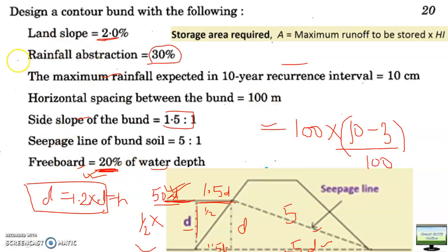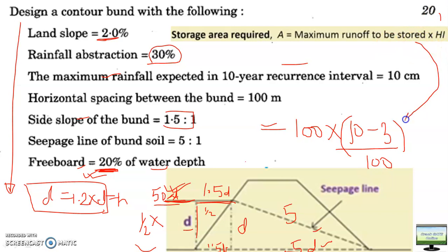This is a very typical question that many people do not understand. Now you know the use of the seepage line, the use of side slope, how to calculate the cross-section area, and what is the use of rainfall data. You calculate the storage requirement from the rainfall, equate that with the storage area behind the bund using the dimension D — the height of water impounding behind the bund. For this you need both the land slope and the side slope of the bund.